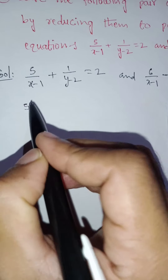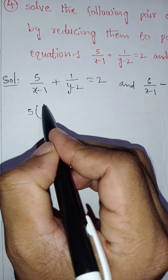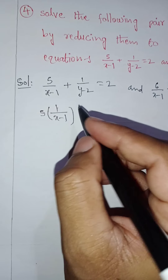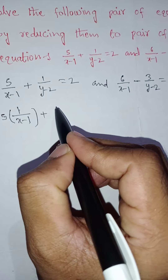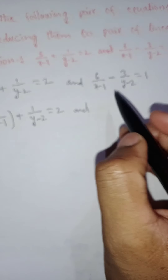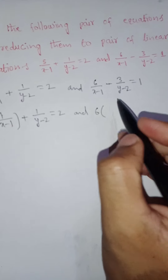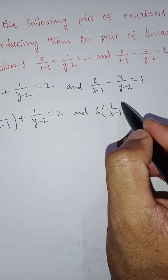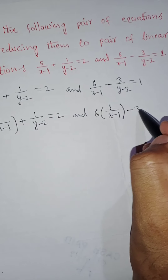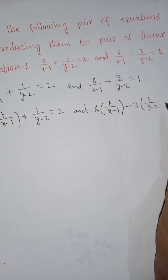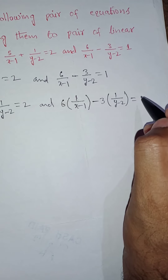Here, observe that 5 into [5 by (x minus 1)] plus 1 by (y minus 2) equal to 2. And for the second equation, 6 into 1 over (x minus 1) minus 3 into 1 by (y minus 2) equal to 1.